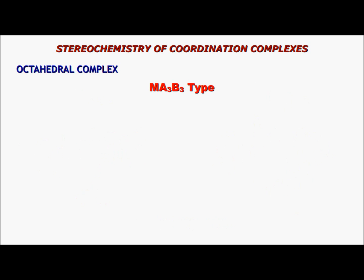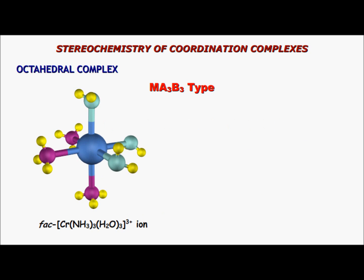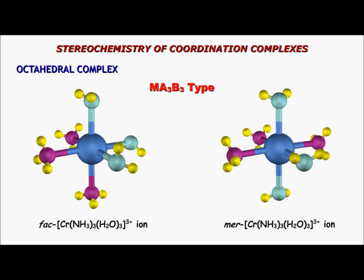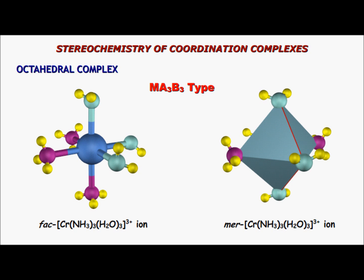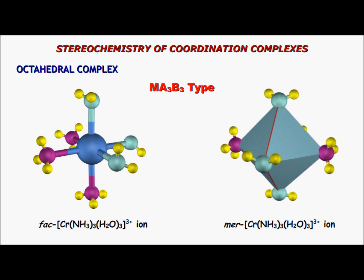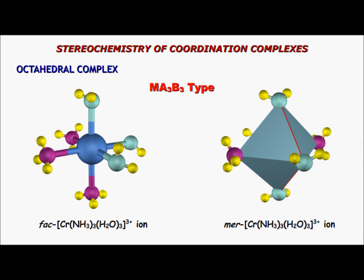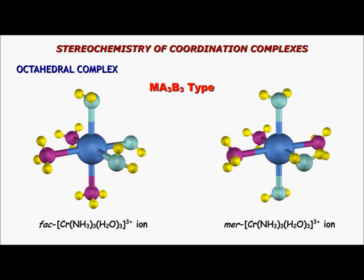Next comes the MA3B3 type — for example, triamine triaqua chromium(III) ion — which has two geometric isomers called fac and mer. Fac isomers have three similar ligands on the face of the octahedron, while mer isomers have three similar ligands on the meridian of the octahedron. Neither has optical isomers because both have a plane of symmetry.